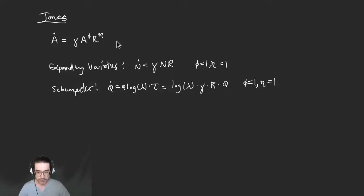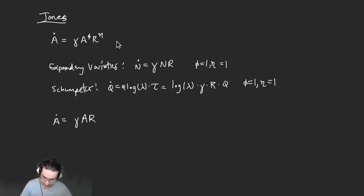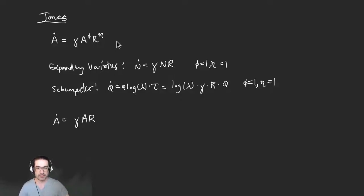Eta equals one gives us the linear free entry condition. When we get these free entry conditions, in the standard Jones notation, in the world we're operating in, we have A-dot equals gamma times A times R — phi equals one, eta equals one. That yields, if you have a value V for that new innovation...